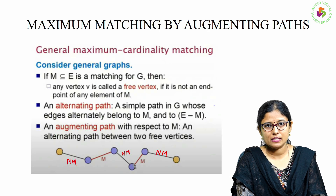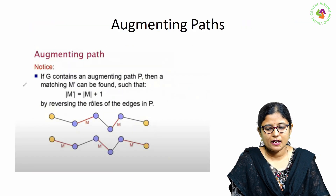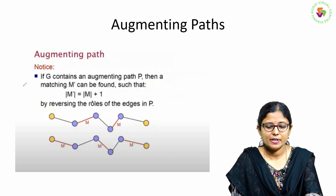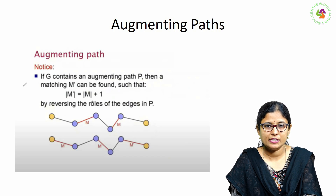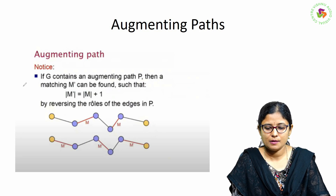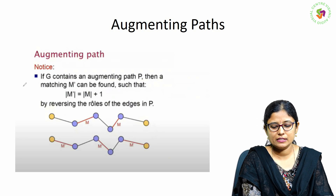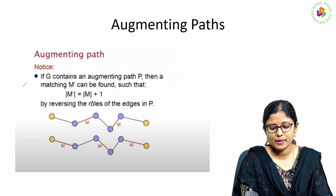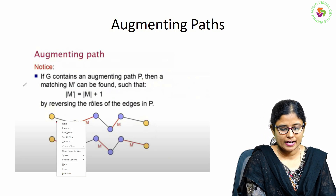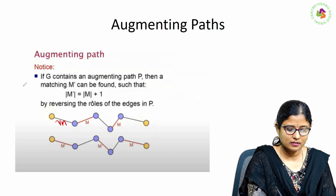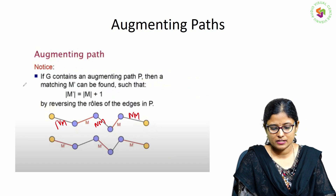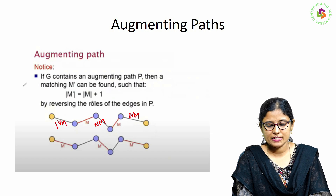So this path is an augmenting path. If G contains an augmenting path P, then a matching M' can be formed such that the number of edges in M' equals the number of edges in M plus 1, by reversing the roles of the edges in the augmenting path P. This is an augmenting path because there are two free vertices at the end, and the edges alternate: not matching edge, matching edge, not matching edge, matching edge, and not matching edge.